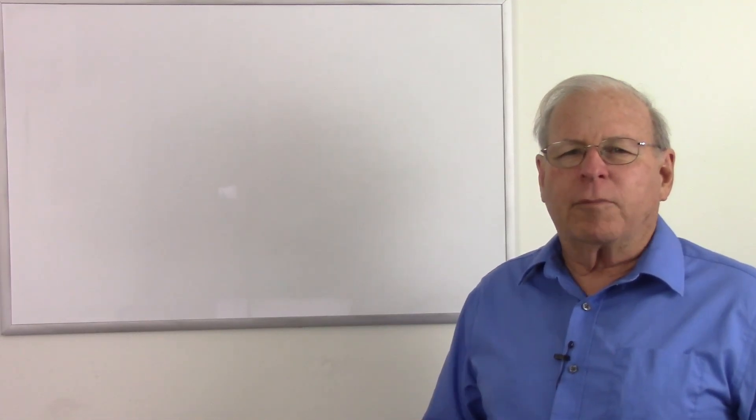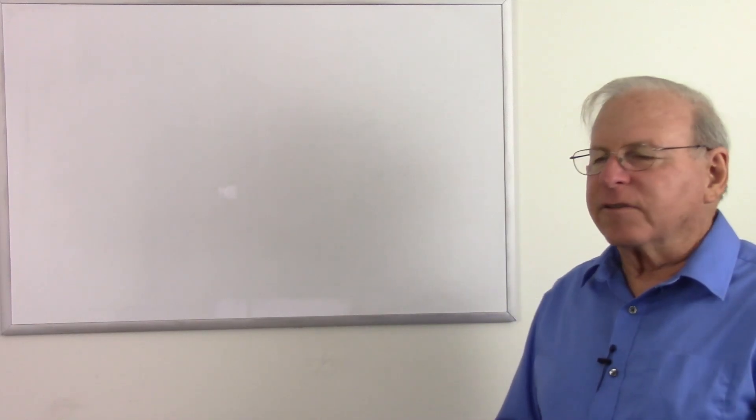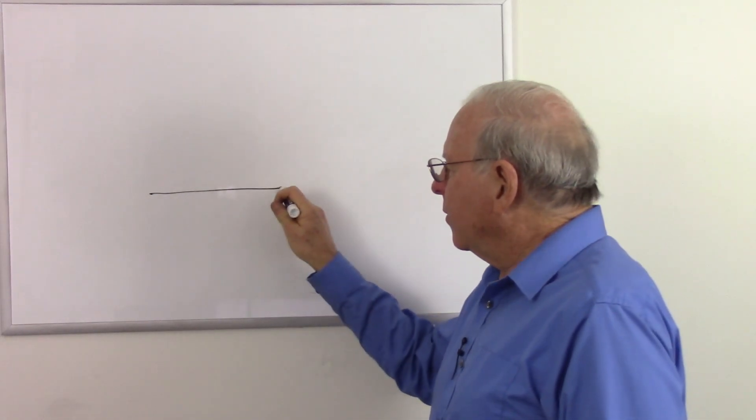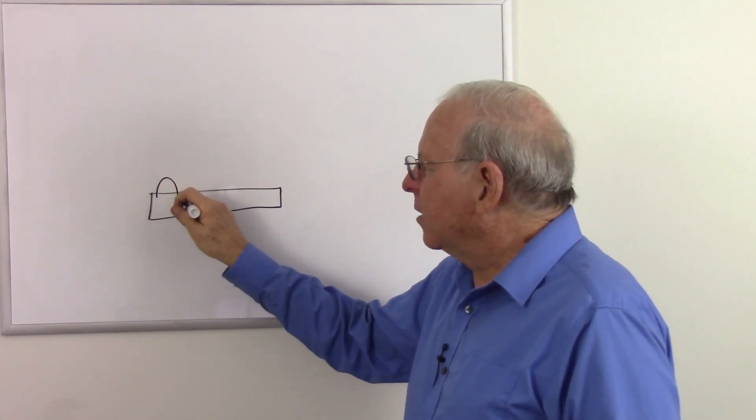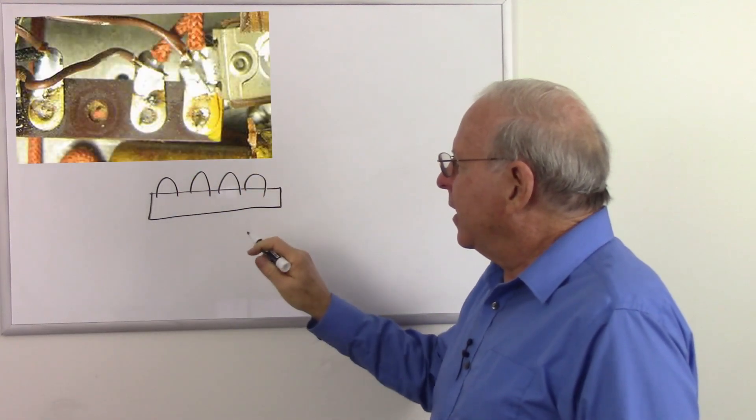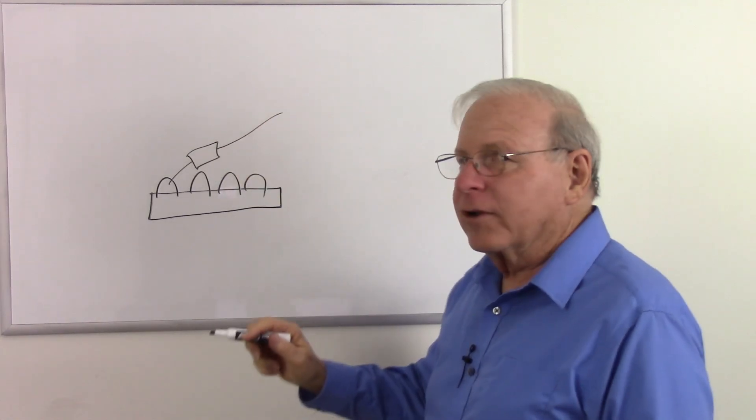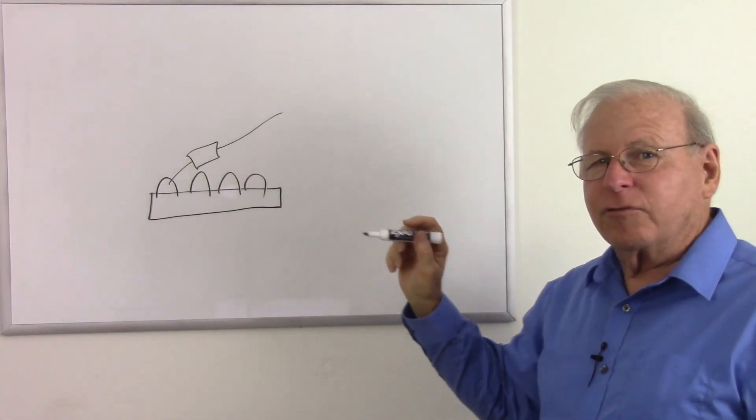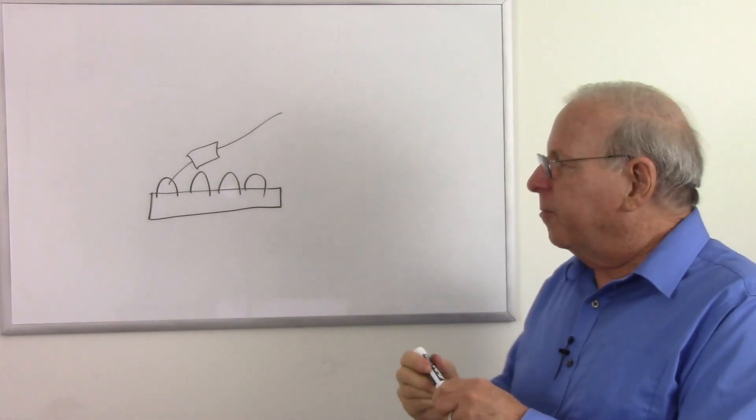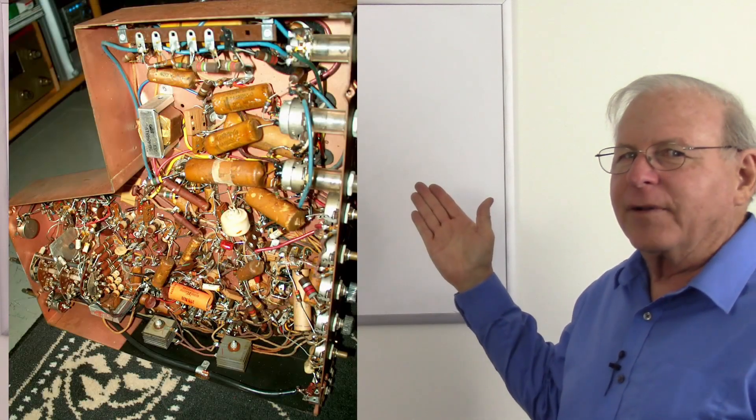Of course, at first they were built point to point, where we had little devices that held a number of metal loops that we could solder components to and lead them over off to other components and have wires lead off to those. These were very time consuming to make. Here's a picture of a circuit that was put together in this manner.